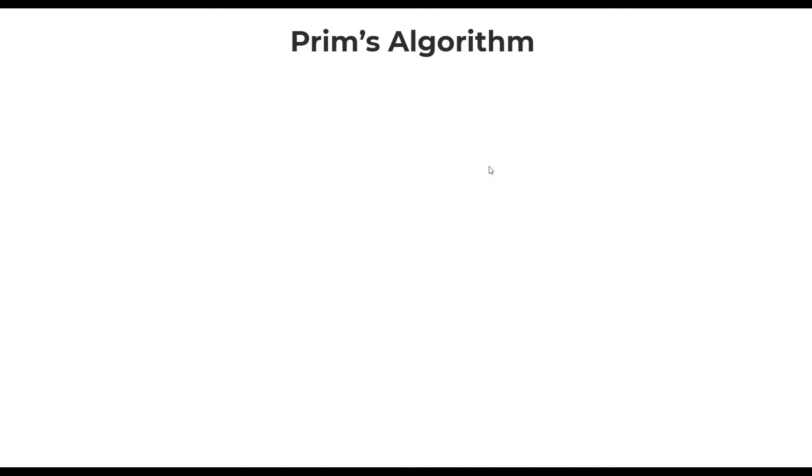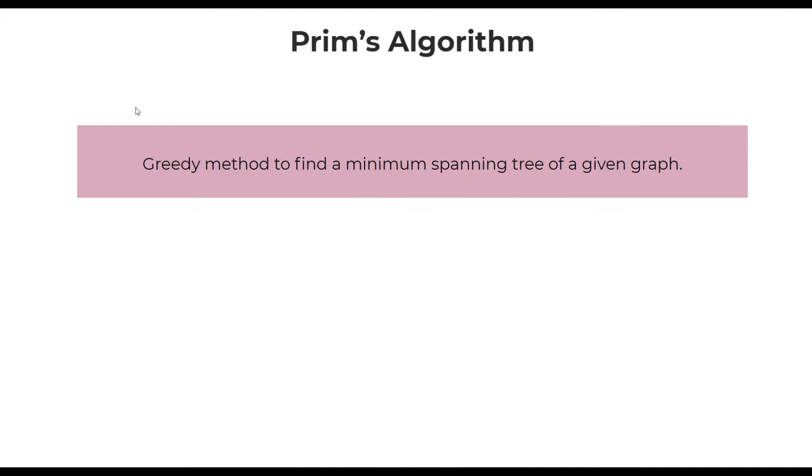In this video, let's learn about Prim's algorithm. Prim's algorithm is a greedy method to find the minimum spanning tree of a given graph.